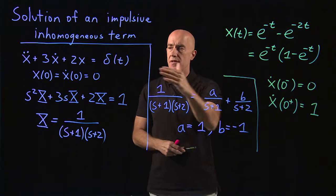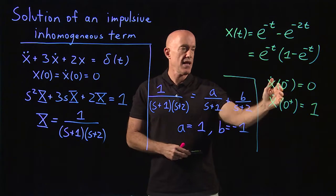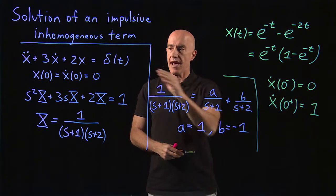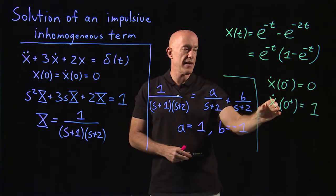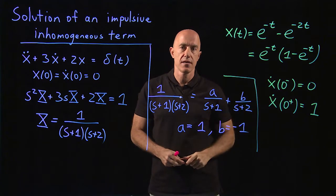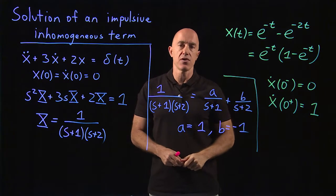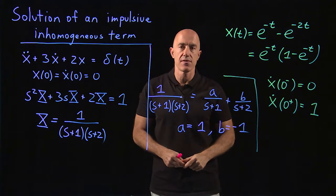Before the impulse hits, x dot is 0. After the impulse hits, x dot equals 1. X is still at 0 before and after the impulse hits.